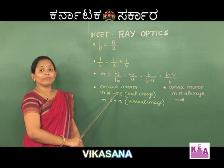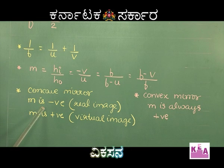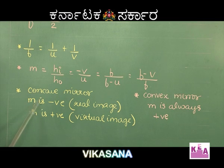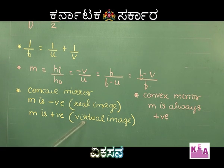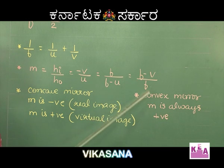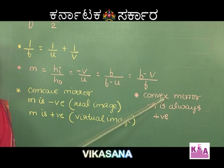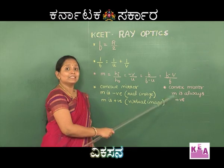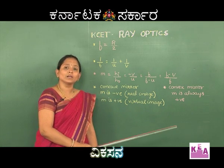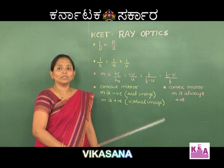In a concave mirror, please note that the magnification can be both positive as well as negative. Magnification is negative when the image formed is real, and magnification is positive when the image formed is virtual. In a convex mirror, magnification will always be positive since the image formed by a convex mirror is always virtual in nature.